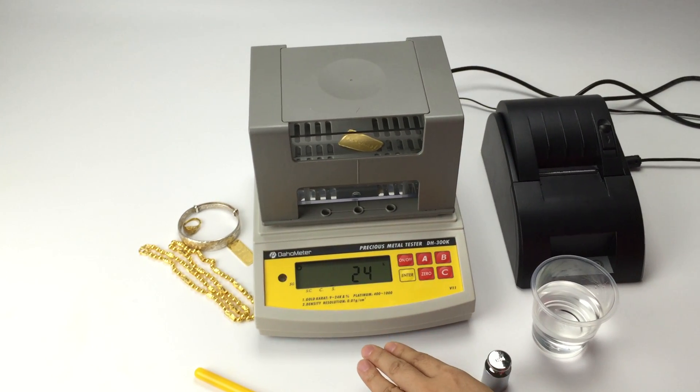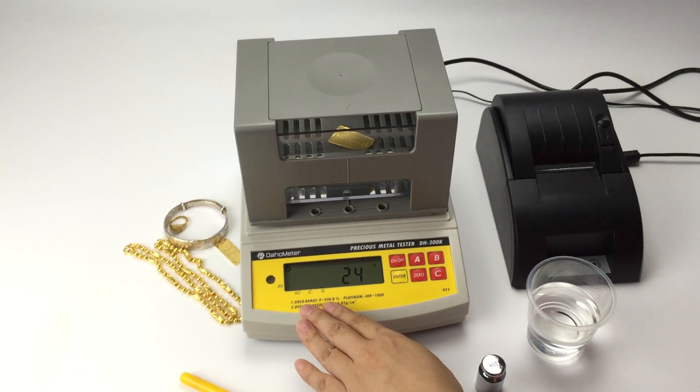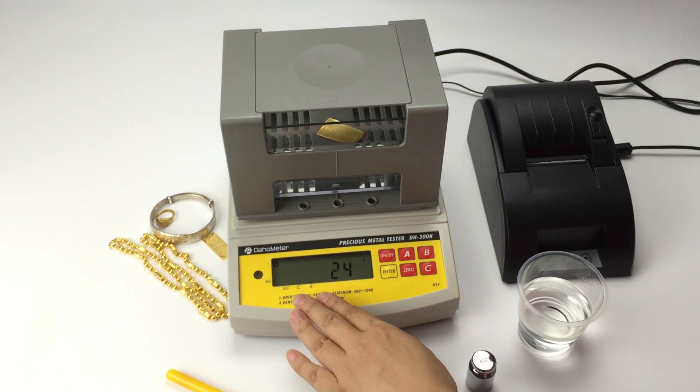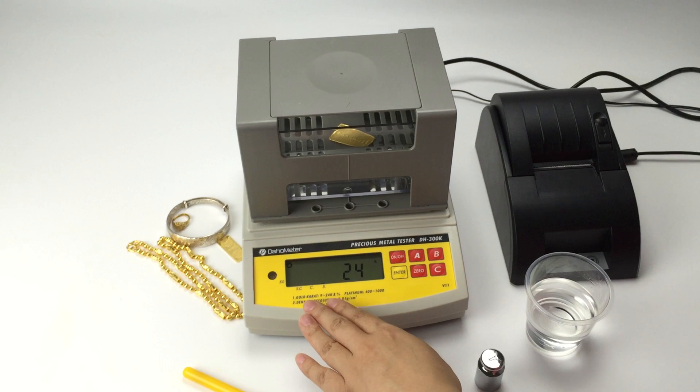Press A again. The arrow is directed to S, which means this is the K value for gold, silver.